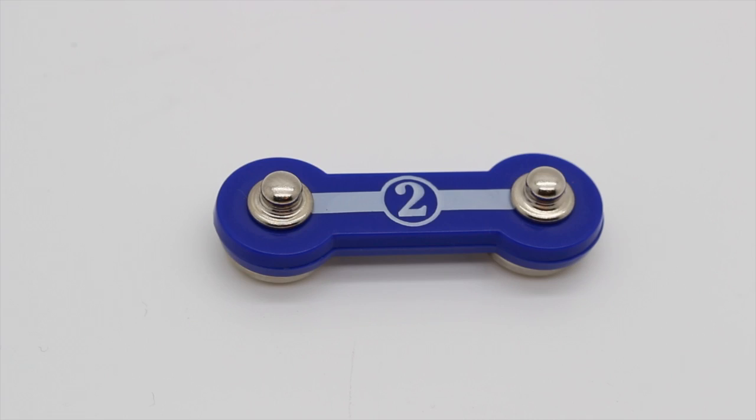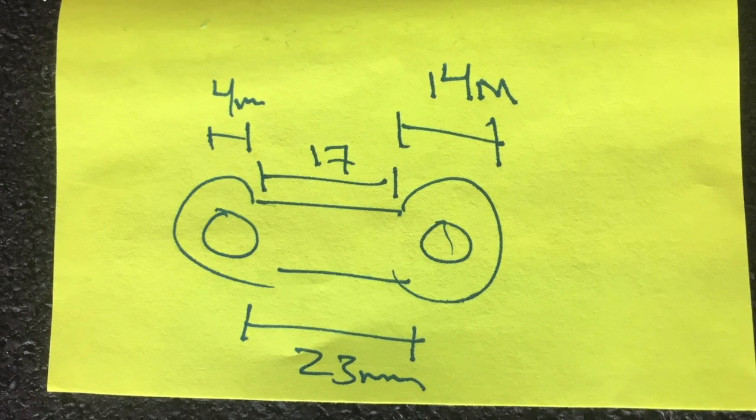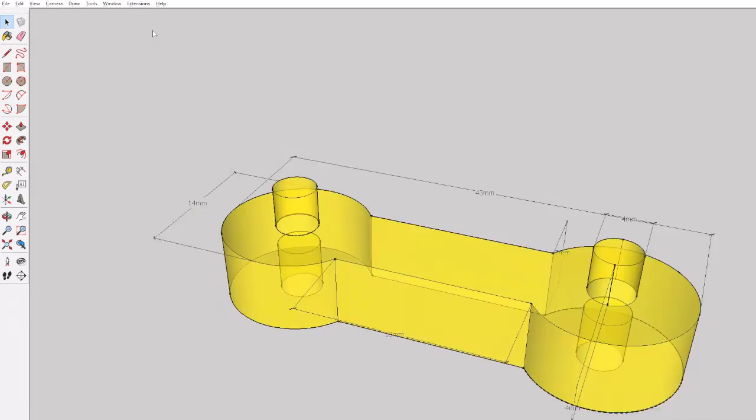The first thing we did was take measurements of one of the connector pieces that came with the circuit board we bought. Then we took those measurements and transferred them into SketchUp to create a 3D model.